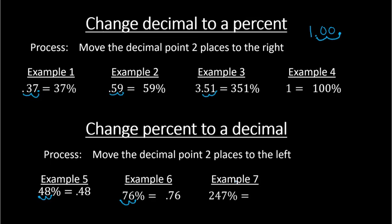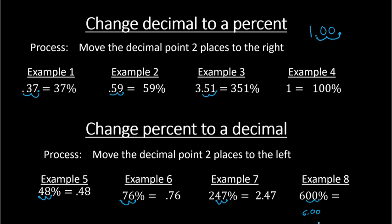What about example 7? We have 247%. Again, the decimal point is assumed to be at the end. To convert percent to a decimal, we move that point two places to the left, which puts it right after the 2, giving us 2.47. Example 8: 600%. As a decimal, we move the decimal point two places to the left to get 6.00 — we don't need the trailing zeros — so that's just 6. So 600% is the same thing as 6.